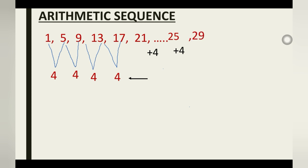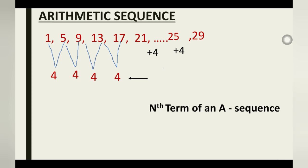But what if the question requires us to find, say, the 50th term of the sequence instead of a term close in the sequence? When that happens, it is basically simple — we use a very nice formula. This formula is used for finding the nth term of an arithmetic sequence, and it is: a_n = a_1 + (n − 1) × d.